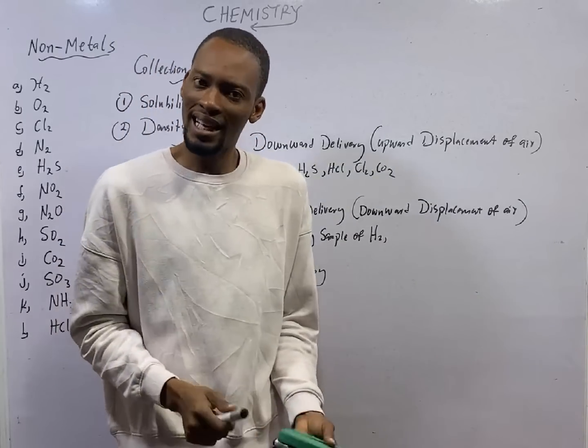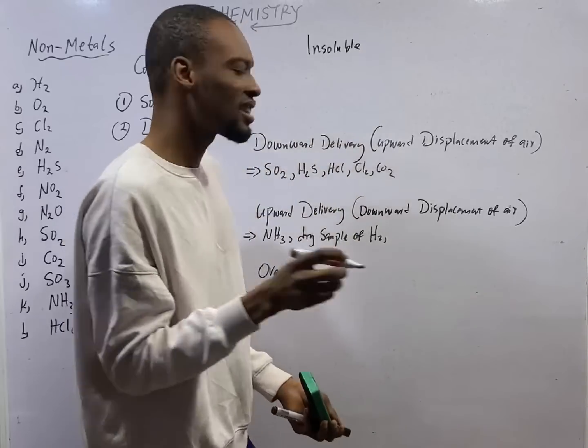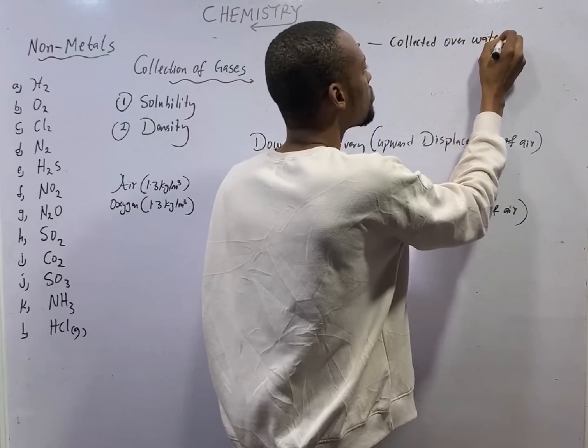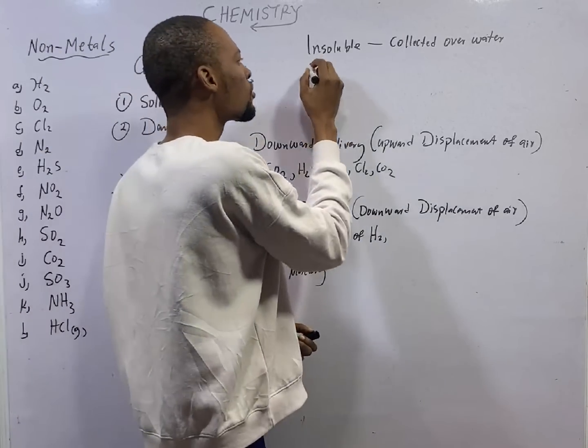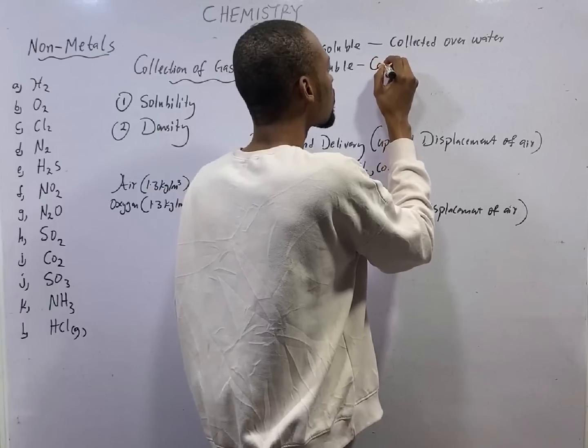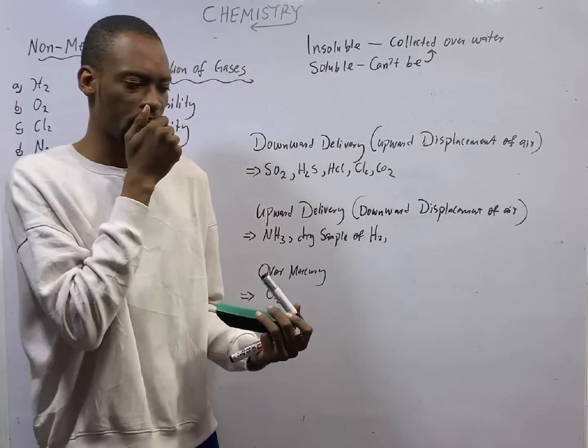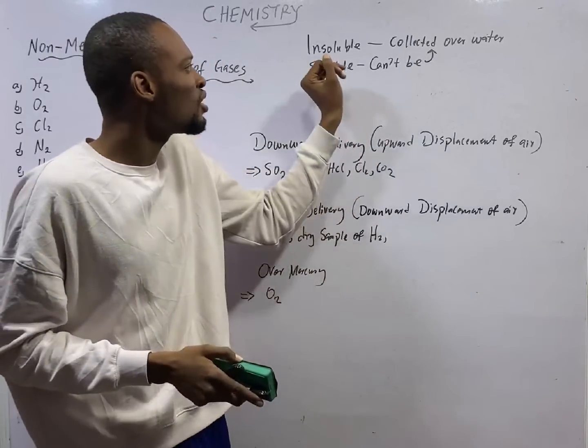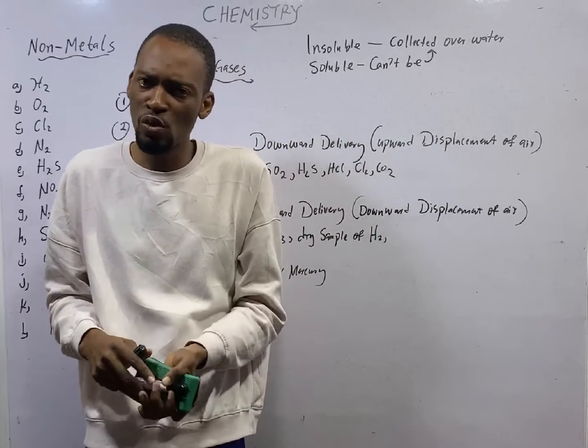If a gas is insoluble in water, that gas can be collected over water. If a gas is soluble in water, that gas cannot be collected over water. A question comes to mind. Since we know that for gases that do not dissolve in water or for gases that are insoluble in water, we collect them over water. How do we collect gases that are soluble in water?